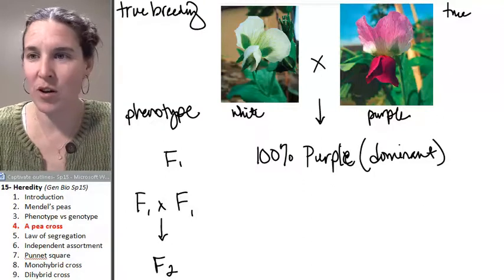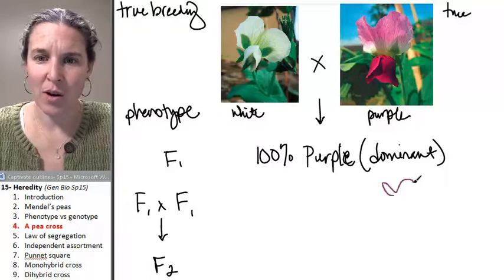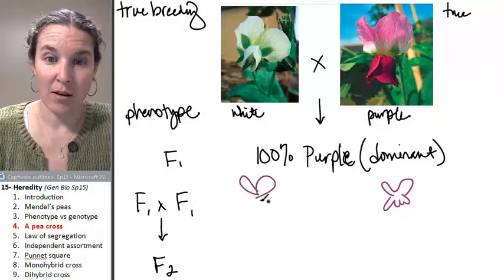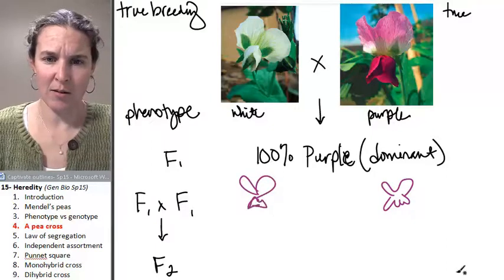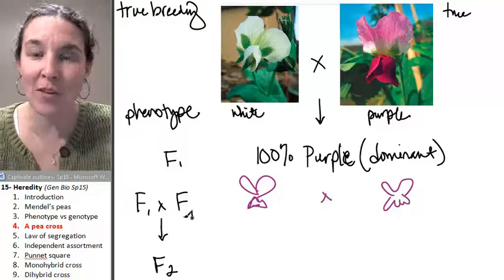I wish I had. I'm going to draw you a purple plant, a purple flower, and I can't draw a pea flower there. Right? It looks exactly like that. So, we crossed two purple pea flowers, but they were the F1 pea flowers.